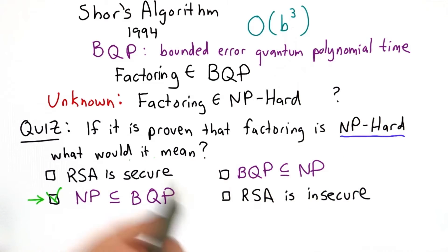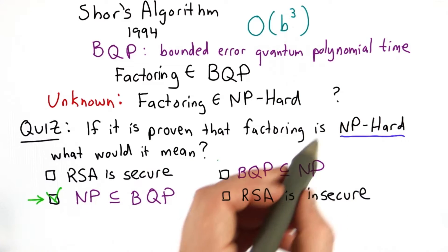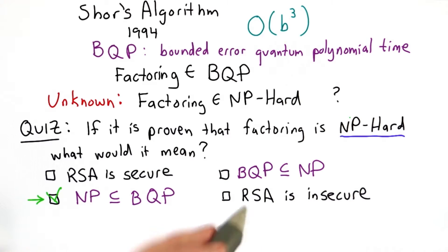But it would increase our confidence because it would put factoring in the class of problems that are believed to be hard to solve in polynomial time as long as P is not equal to NP.